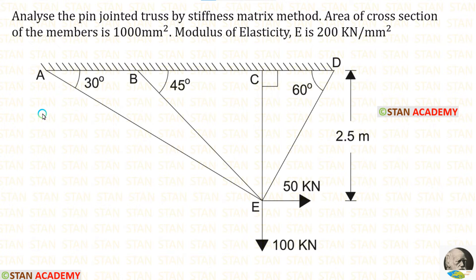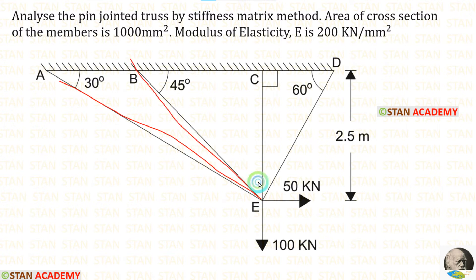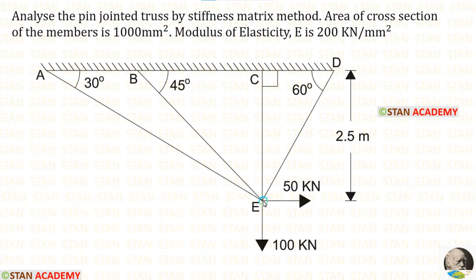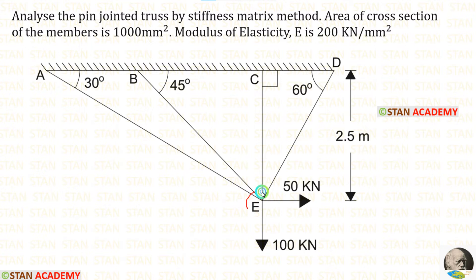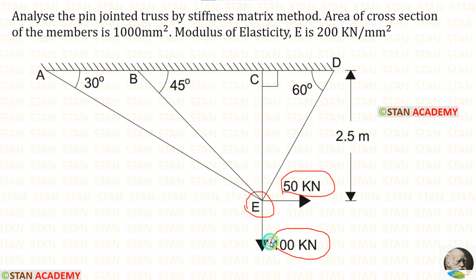In this truss there are four members: EA, EB, EC and ED. The length of member EC is given as 2.5 meters. At joint E there are two loads — 50 kilo newton acting horizontally and 100 kilo newton acting vertically.